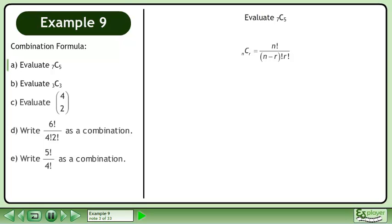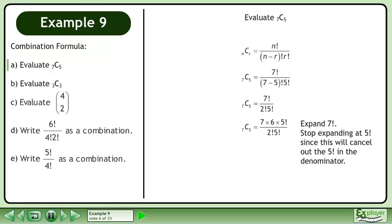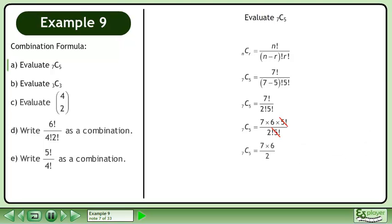Rewrite the combination formula. Plug in n and r. Simplify. Expand 7 factorial, stopping at 5 factorial since this will cancel out the 5 factorial in the denominator. Cancel the 5 factorials. The answer is 21.